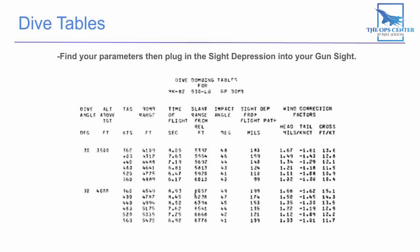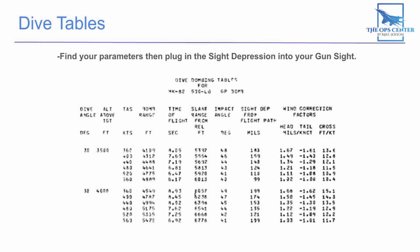Back before aircraft carried computers that could do all of the calculations for you, the calculations were all stored in dive bombing tables found in an aircraft's flight manual. The way you use this chart is: first find your planned dive angle, then your release altitude, and finally your release speed. Then you come over to the column and find your sight depression from your flight path. All you have to do is dial it into your gun sight and you're done.